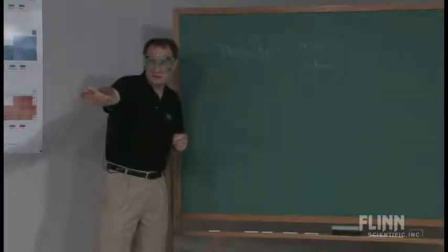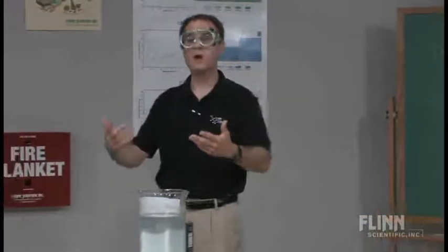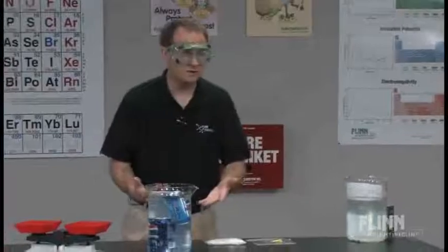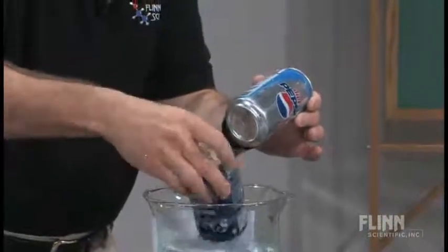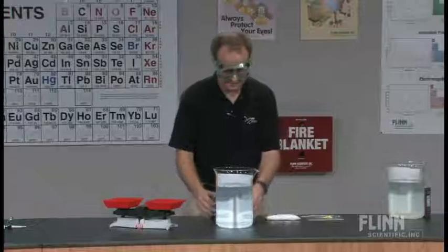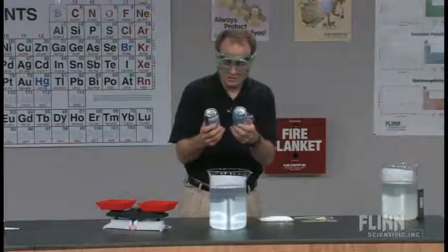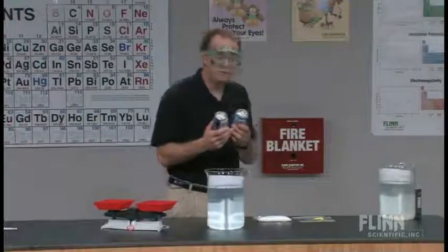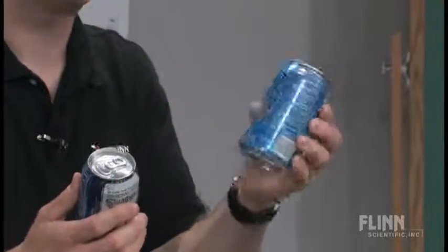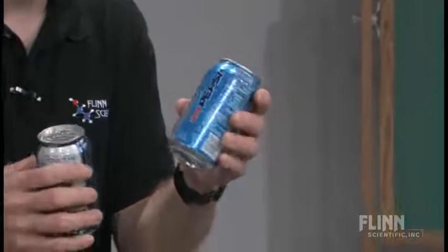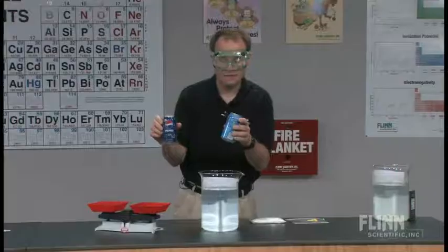Now that we've seen one soft drink can sinking and one floating, the logical question is why — what are we seeing, why are we seeing this difference in density? If we look at the volume variable in the density equation, we see that each can has a volume of 355 milliliters: 355 milliliters on the diet and 355 milliliters on the regular. So the volumes are the same.